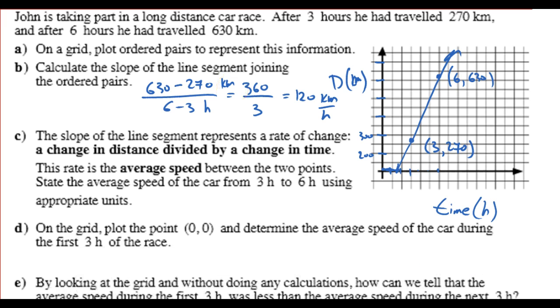The slope of the line segment represents the rate of change. A change in the distance divided by a change in time. This rate is called the average speed. As we all know, if I say 120 kilometers per hour, I know exactly how fast I'm going. As opposed to saying, oh, I'm going 360 kilometers every 3 hours. Well, that doesn't really help me. I got to do some math conversion here.